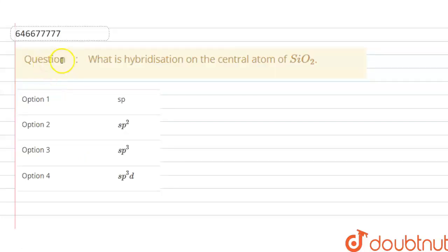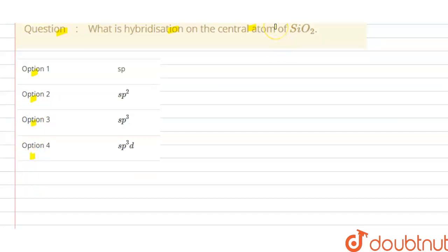Hello students, today our question is: what is the hybridization on the central atom of silicon O2, SiO2? Options A, B, C, D are given here, so we have to choose the correct option.